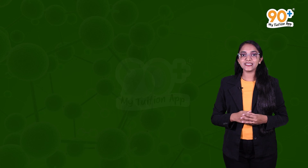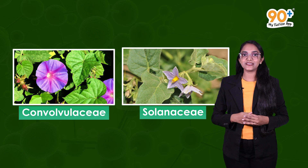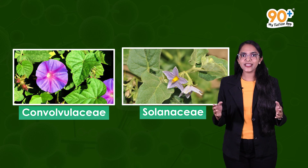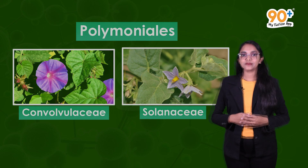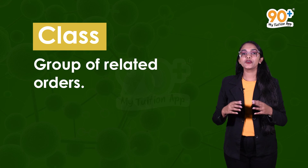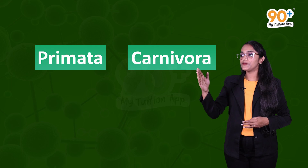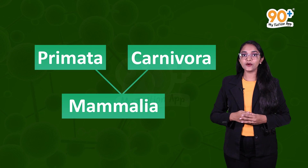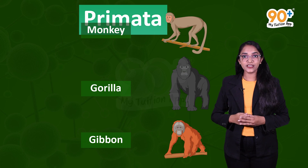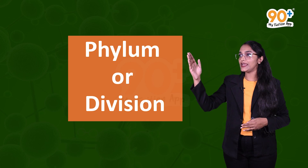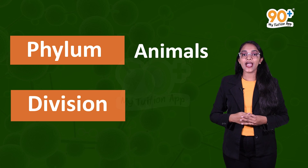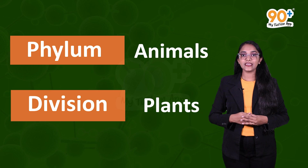The next higher category is order — an assemblage of families which show very few similar characters. For example, plant families Convolvulaceae and Solanaceae can be included under the order Polemoniales by considering their floral characters. The next higher category is class — a group of related orders. Order Primate and Order Carnivora both fall under Class Mammalia. Order Primate includes animals like monkeys, gorillas, and gibbons, while Order Carnivora includes animals like tigers, cats, and dogs.